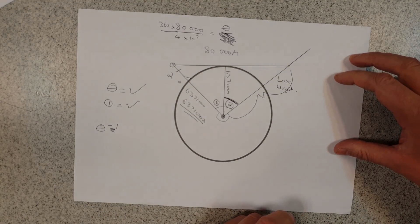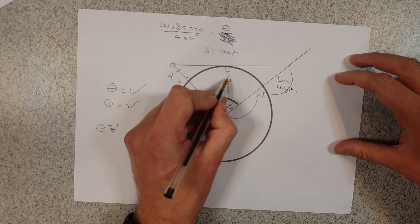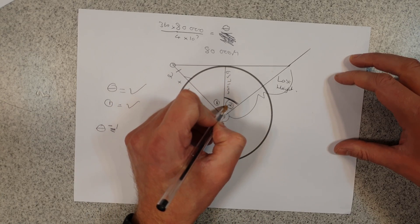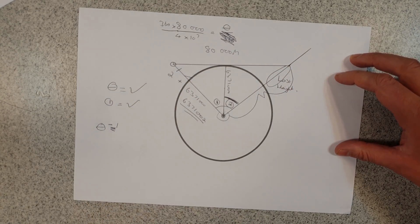And once I know the entire length, if I subtract the radius of the earth from it—6,371,000 meters—I'm left with just the lost height up here.